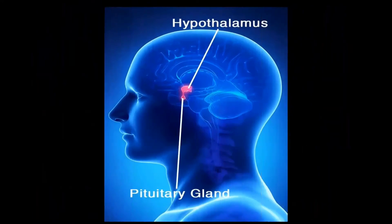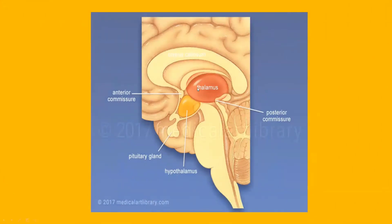In the diagram, the thalamus, hypothalamus, and pituitary gland can be seen together. The thalamus is shown in red, the hypothalamus in yellow, and the pituitary gland in brown or pale yellow. To understand how hormonal flow happens in the Resistance Stage, we focus on these two key areas of the brain: the hypothalamus and the pituitary gland.